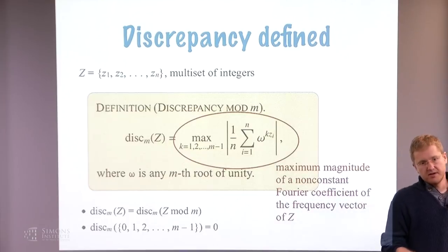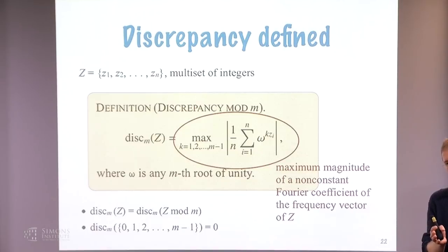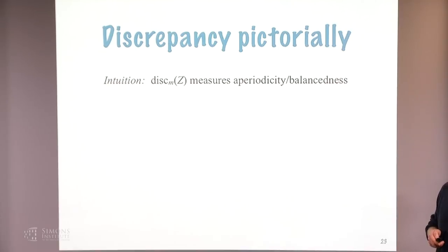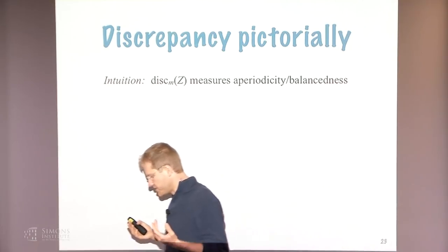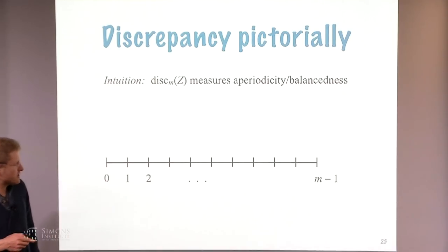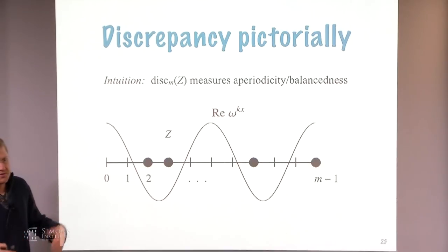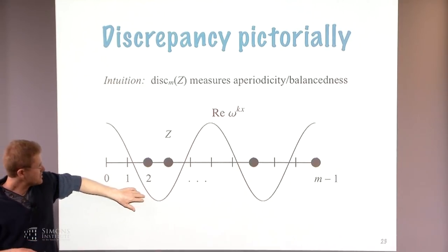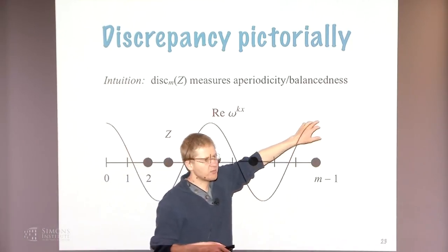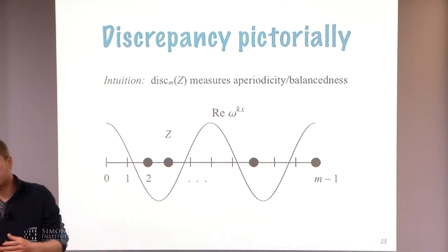We are interested in constructing very tiny sets with discrepancy close to 0. Pictorially, the discrepancy of a set of integers measures aperiodicity or balancedness — a pseudo-random complexity measure. Consider a specific Fourier character: if points hit the highs and lows unevenly, the average is bounded away from 0, giving high discrepancy. You want the points placed such that no matter what Fourier character you consider, you hit the highs as often as the lows, so the sum comes out to roughly 0.